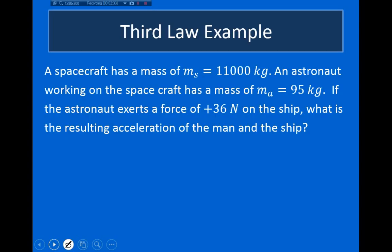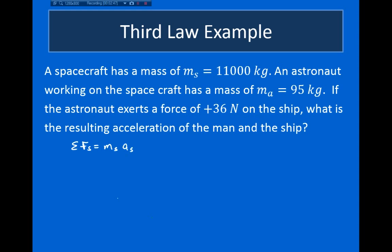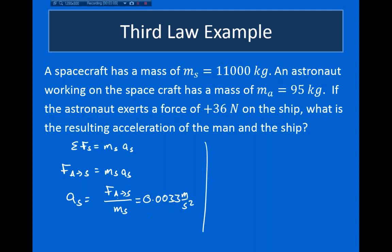Let's use Newton's second law to find the accelerations. The sum of the forces on the ship is equal to the mass of the ship times its acceleration. The force the astronaut exerted on the ship equals the mass of the ship times its acceleration. Solving for the acceleration, this is the force divided by the mass of the ship, which equals 0.0033 meters per second squared. The ship moves very slowly because it has a large inertia — it weighs 11,000 kilograms.